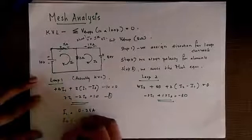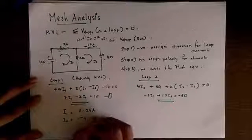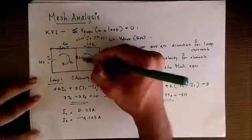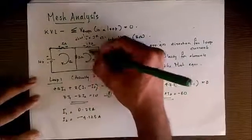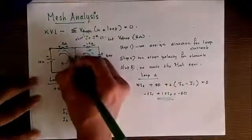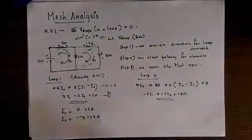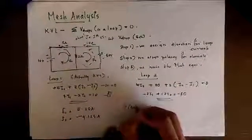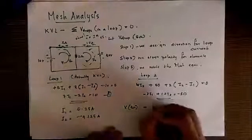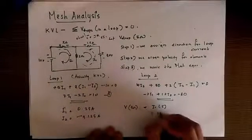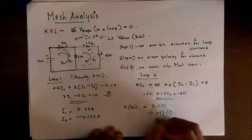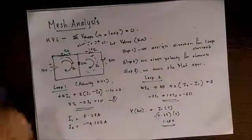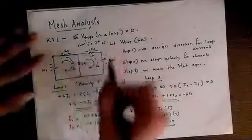And I2 as minus 4.125 amperes. This minus sign indicates that I2 is actually in the opposite direction that we took, that is the anti-clockwise direction, and I1 is in this direction. Okay, so now we have to find the voltage drop across 5 ohm. Voltage drop across 5 ohm is I1 into 5, which is equal to 0.25 into 5, which is 1.25 volts. This is the answer.